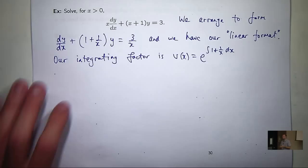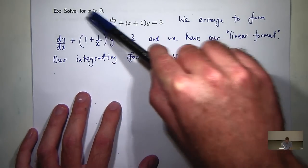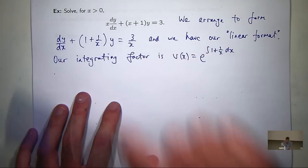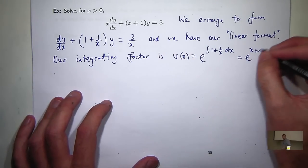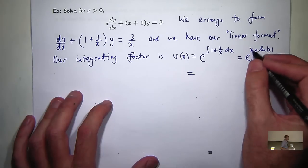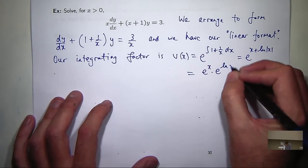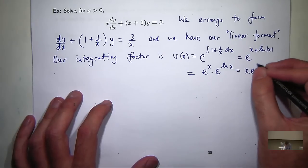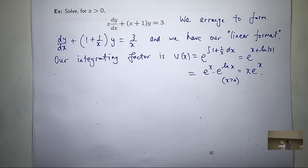So here I've got to integrate 1 plus 1 on x. So I'm going to get x plus a logarithm. And because x is positive, we're only concerned with our solutions defined for positive x. We're going to get some nice cancellation. So it's going to be e to the x times e to the log x. This is just going to be x. So in this case, our integrating factor is x times e to the x.